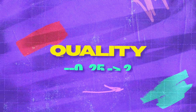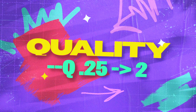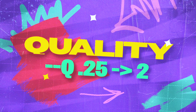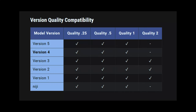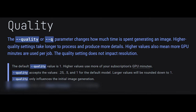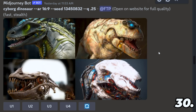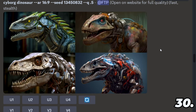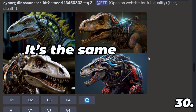You can add a quality parameter denoted by dash dash q and then a number between 0.25 and 2. This value determines how much rendering time you want to apply. Default is 1. The lower the value, the quicker and cheaper the picture will generate. The higher the value, the more expensive and longer it will take. Here is 0.25 — it does not look very good — 0.5, 1 (the default), and 2.